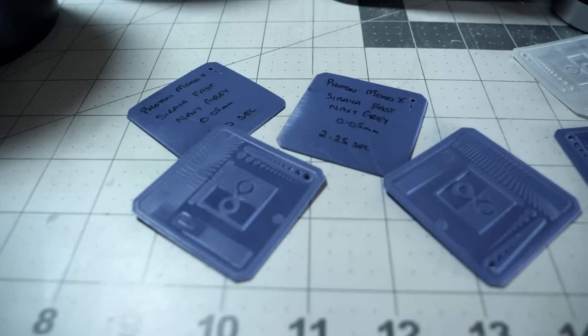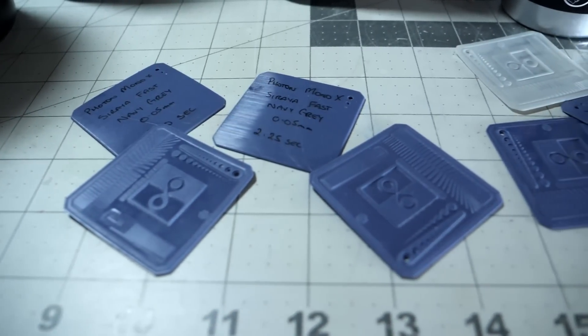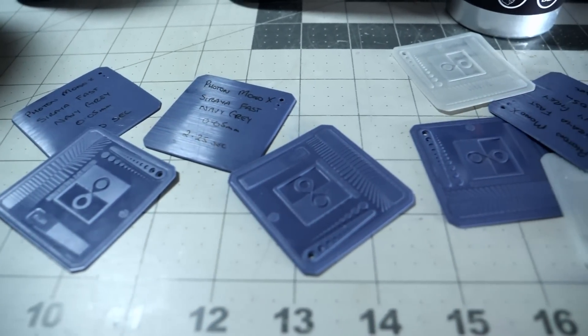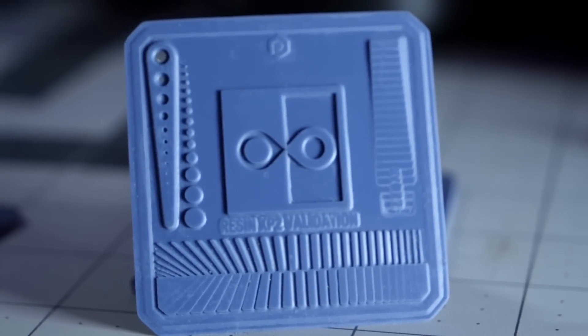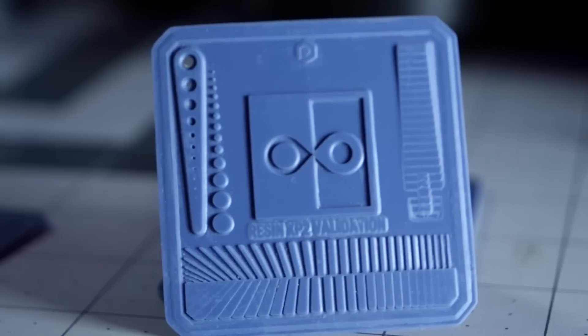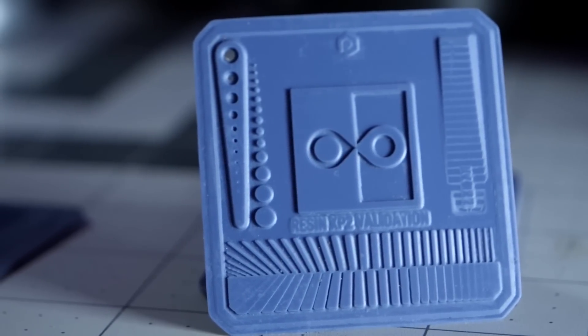So first, in comes the exposure finder test or XP2 validation test. This model is perfect to give you the initial point of calibration for X and Y. It's a very quick print on mono screens. It takes roughly about five to eight minutes and uses very minimal resin.